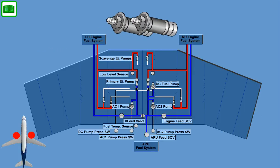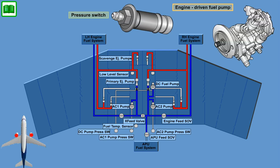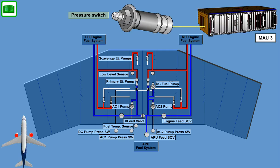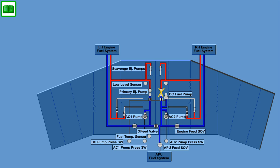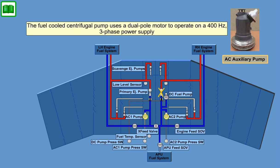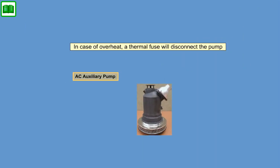A pressure switch is installed immediately upstream of the engine-mounted low-pressure fuel pump to monitor engine inlet feed pressure. This pressure switch provides inputs to MAU number 3. In the event of failure of the main engine feed ejector pump, the AC auxiliary boost pump provides backup fuel flow to the engine. The fuel-cooled centrifugal pump uses a dual-pole motor to operate on a 400 Hz three-phase power supply. In case of overheat, a thermal fuse will disconnect the pump.